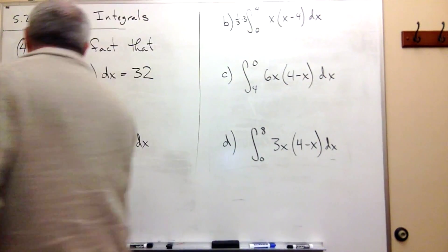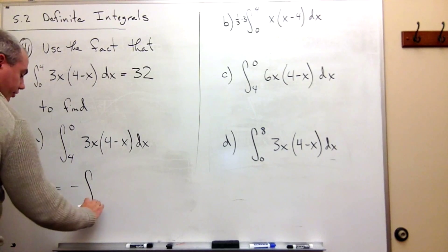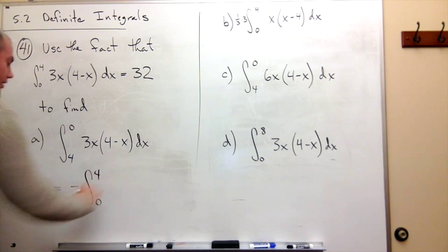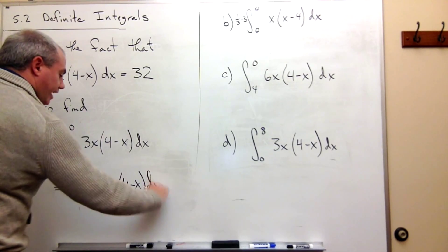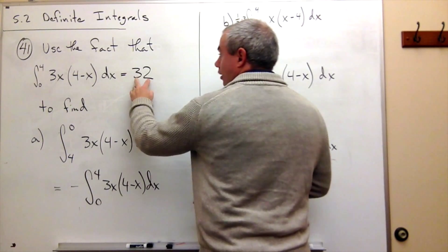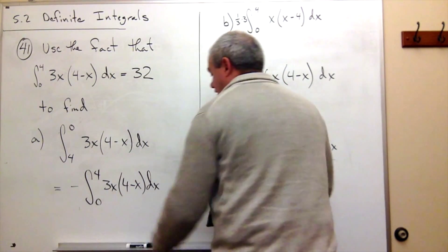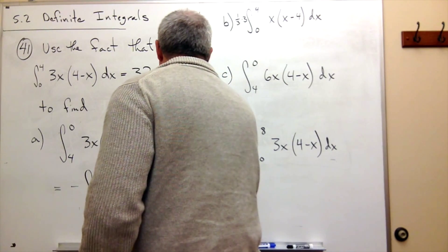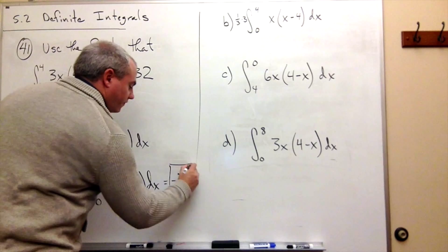So what I can do is I can rewrite this. This is equal to negative integral from 0 to 4 of 3x times 4 minus x dx. But I know what that integral is. That's what I started with. It's 32. So I just have negative 32. So the answer is negative 32 for part a.